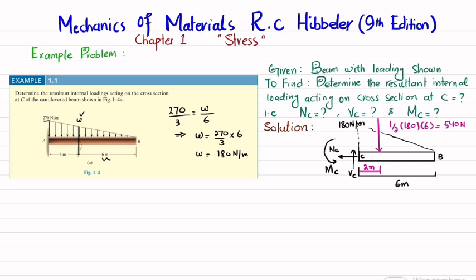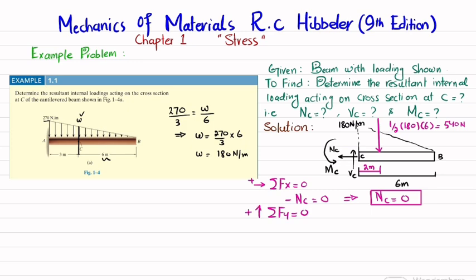Now we apply the equation of equilibrium. First, the sum of all forces along the x-direction must equal zero, with force toward the right taken as positive. The only horizontal force is Nc, acting in the negative direction, so Nc equals zero. For Vc, the sum of all forces along the y-direction must equal zero, with upward force positive. Vc minus 540 N equals zero, so Vc equals 540 N.